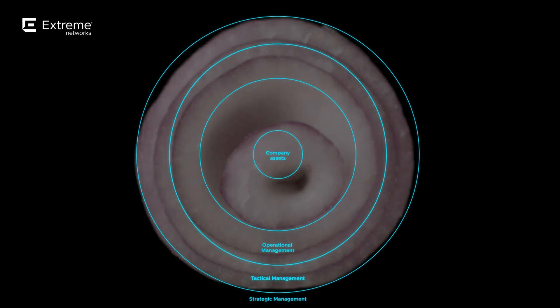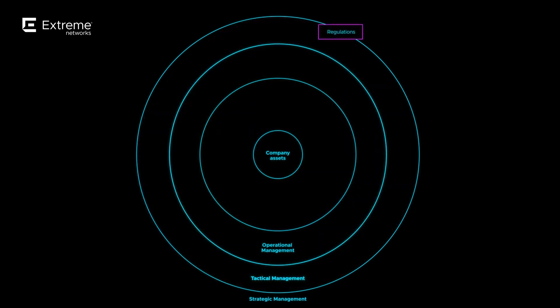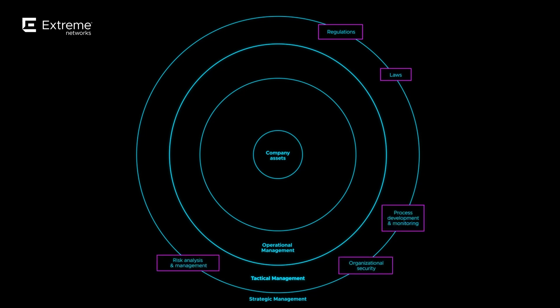Let's look at this diagram in a little more detail. If you look at the top, you'll see regulations — regulations that are enforced on organizations, laws that might be enforced on organizations. This is all in the strategic management layer, the outside layer: governance model, policy development, security program. A lot of these topics we've covered.